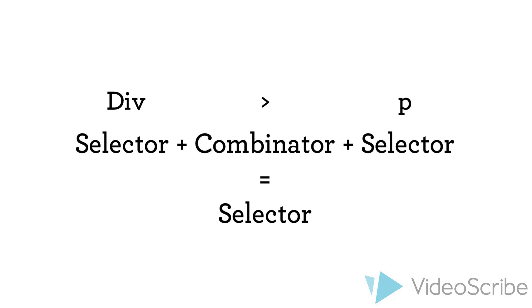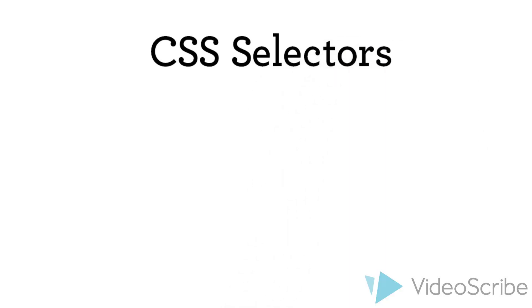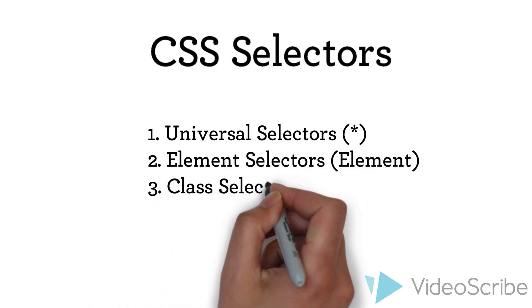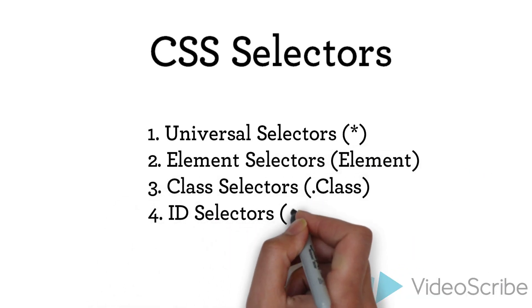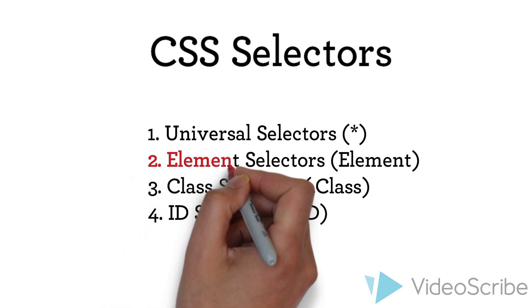So now we have been talking a lot about selectors, which we hope you already know and understand. But let us just recall the four most important selectors. We have the universal selectors, element selectors, class selectors, and id selectors. For our example we will concentrate on element selectors.